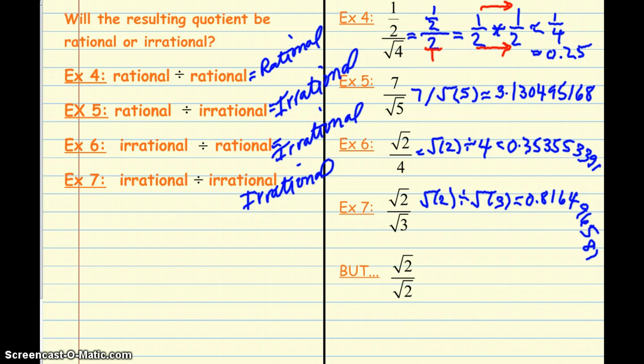Okay, but I've got this last example here. What do you notice about this last example? It's exactly the same thing in the numerator and the denominator. And when you divide something by itself, what's the result? It's simply just one. And what do you know about the number one? It is rational. So in this case, with the division, it can also be either rational or irrational.